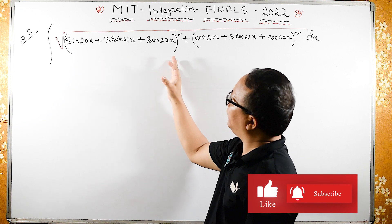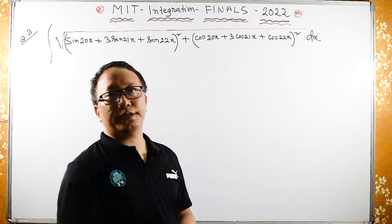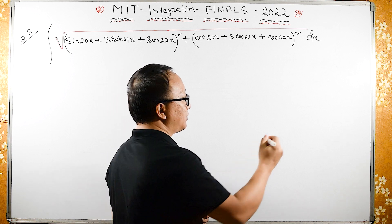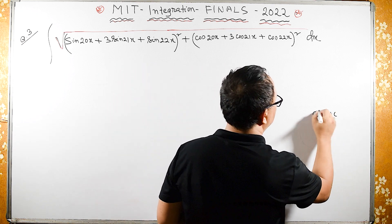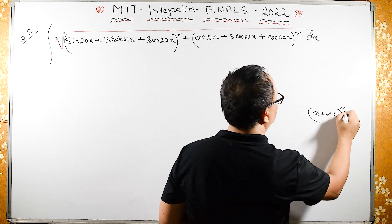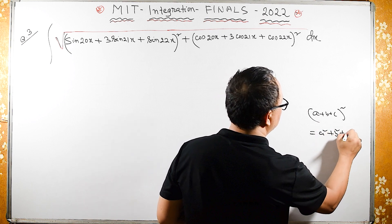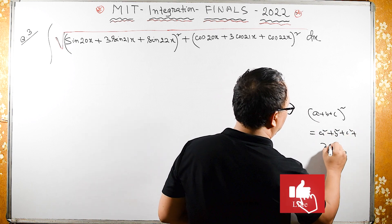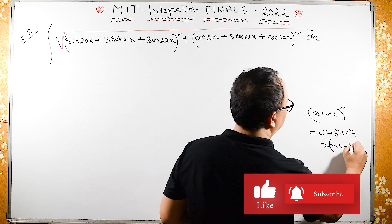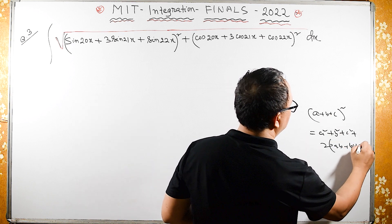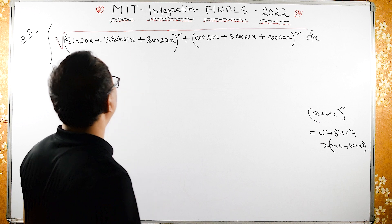In this question we will be using effectively (a + b + c)² . So what we have is (a + b + c)² equals a² plus b² plus c² plus 2ab plus 2bc plus 2ac. This we will use effectively.